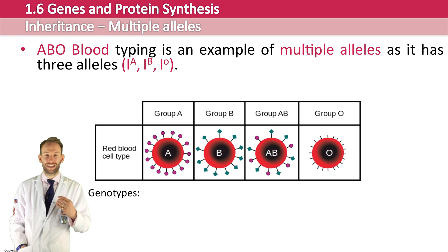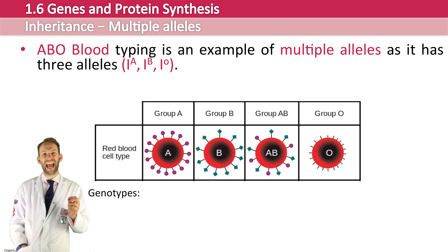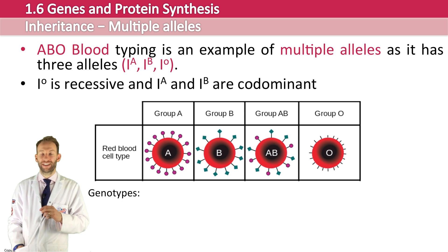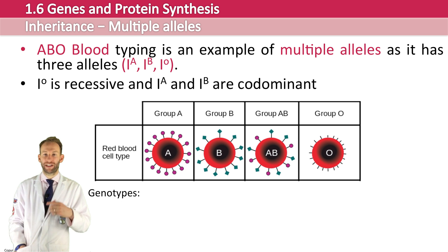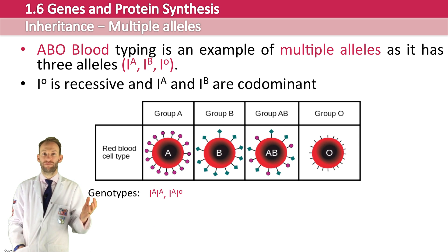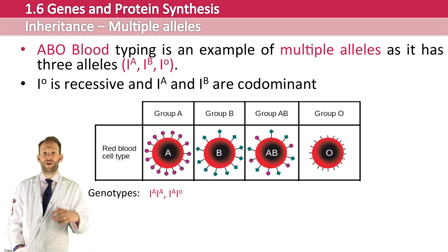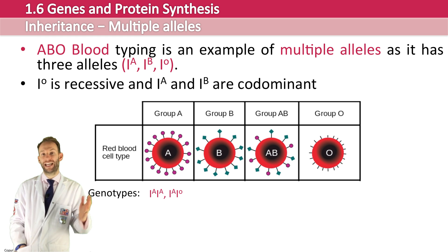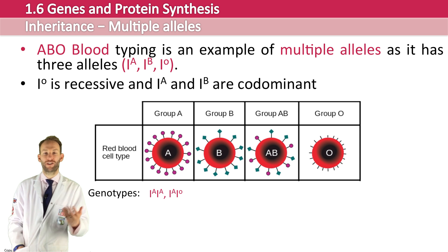IO is actually a recessive allele, while IA and IB are co-dominant. With blood group A, you could be IAIA — homozygous dominant, inheriting A from both parents — or you could have inherited IA from one parent and IO from the other. Since IO is recessive, you'd still end up with a phenotype of type A.